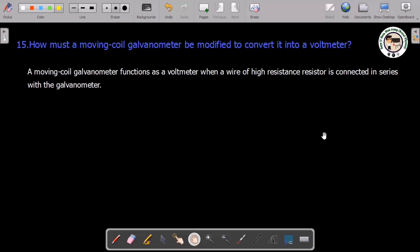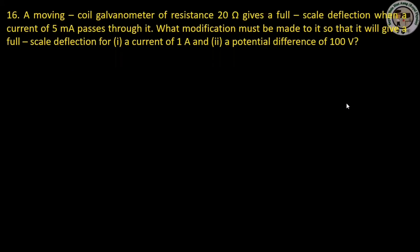A galvanometer functions as a voltmeter when a high-resistance multiplier resistor is connected in series with the galvanometer. Now we can see that the galvanometer is a moving-coil type with resistance 20 ohms. It gives full-scale deflection when a current of 5 mA passes through it.